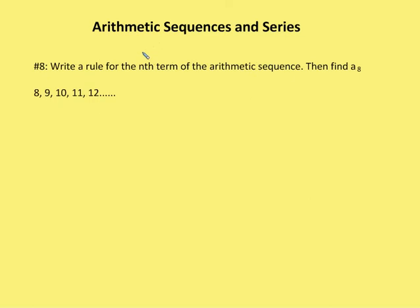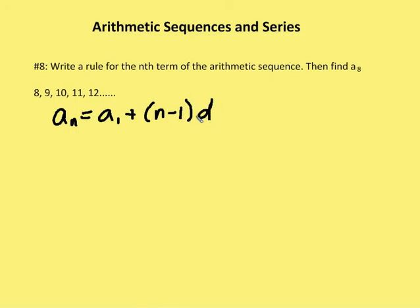The next problem asks us to write a rule for the nth term of the arithmetic sequence, and then find a sub eight. The first thing we want to do is remember our rule for an arithmetic sequence: a sub n is equal to a sub one plus n minus one times the common difference. In this case, my common difference is one, and a sub one is eight — that's the first value.